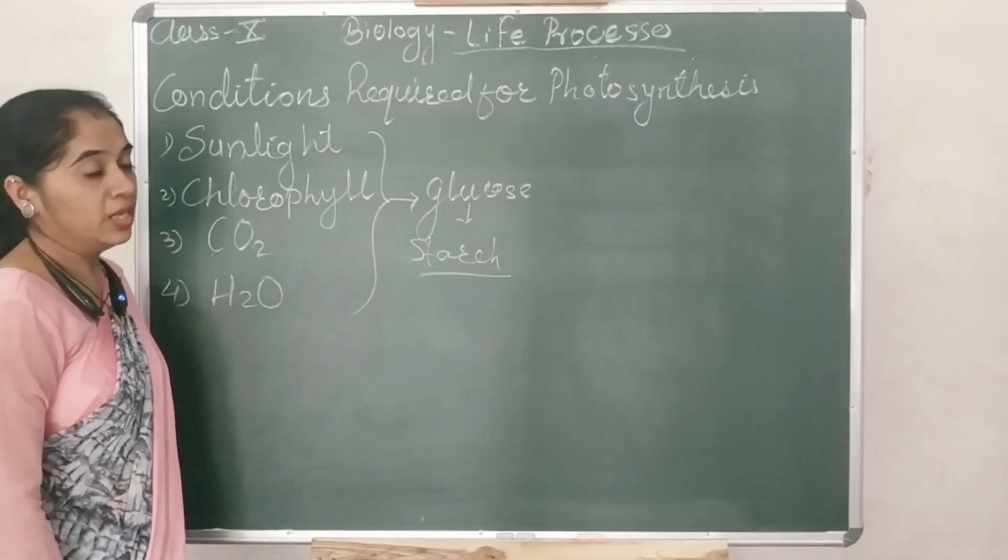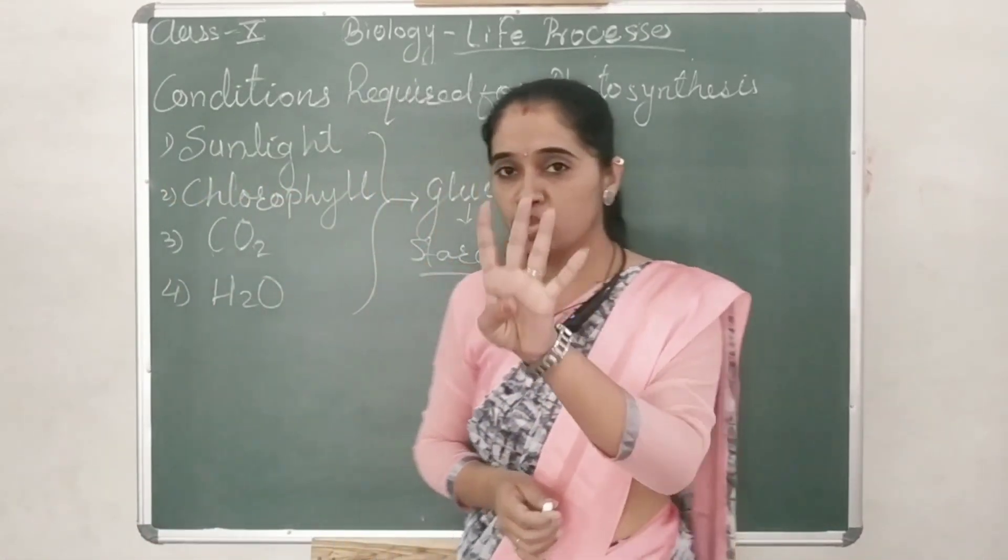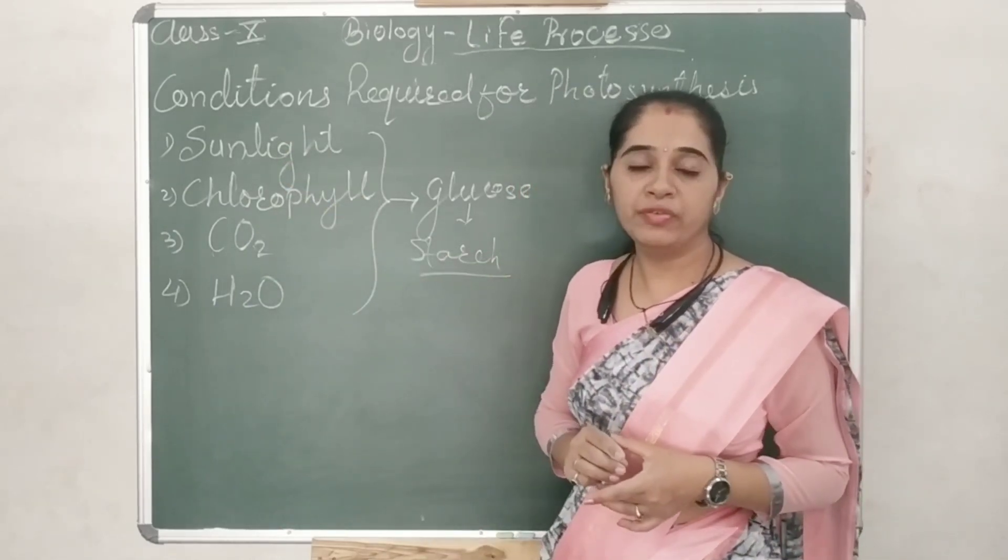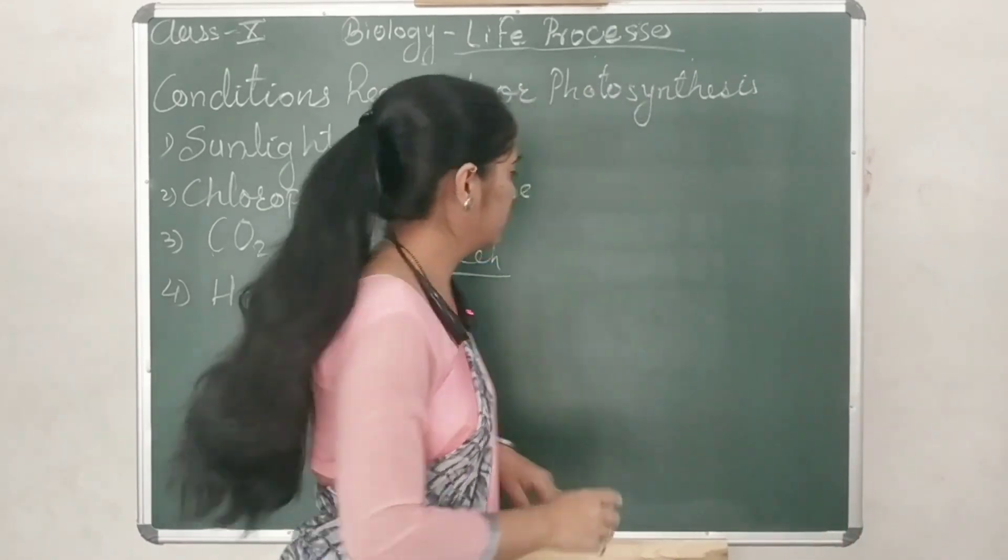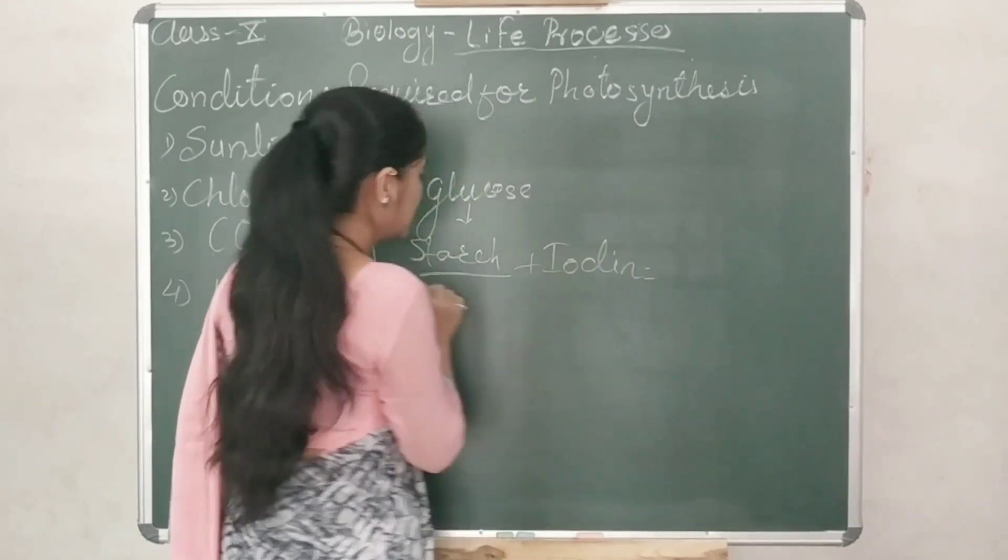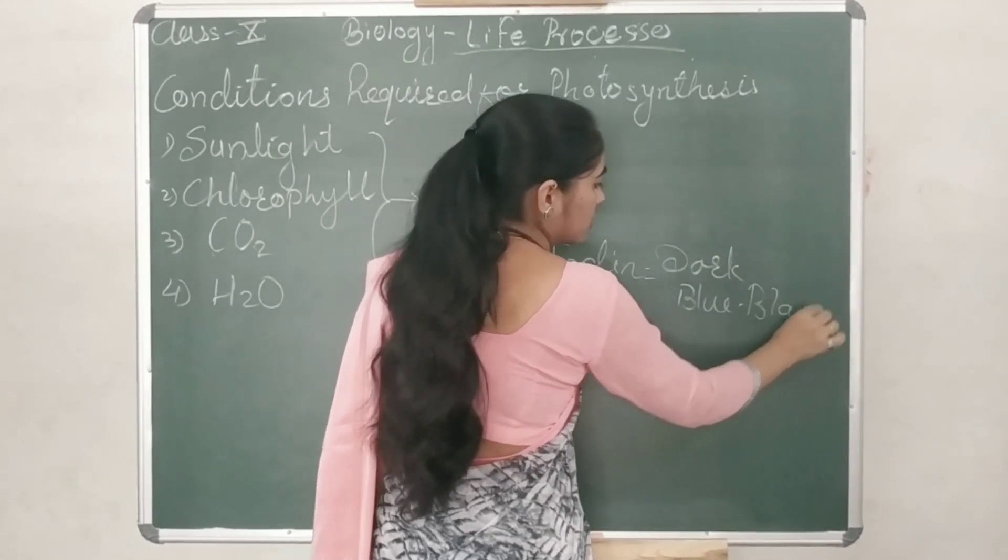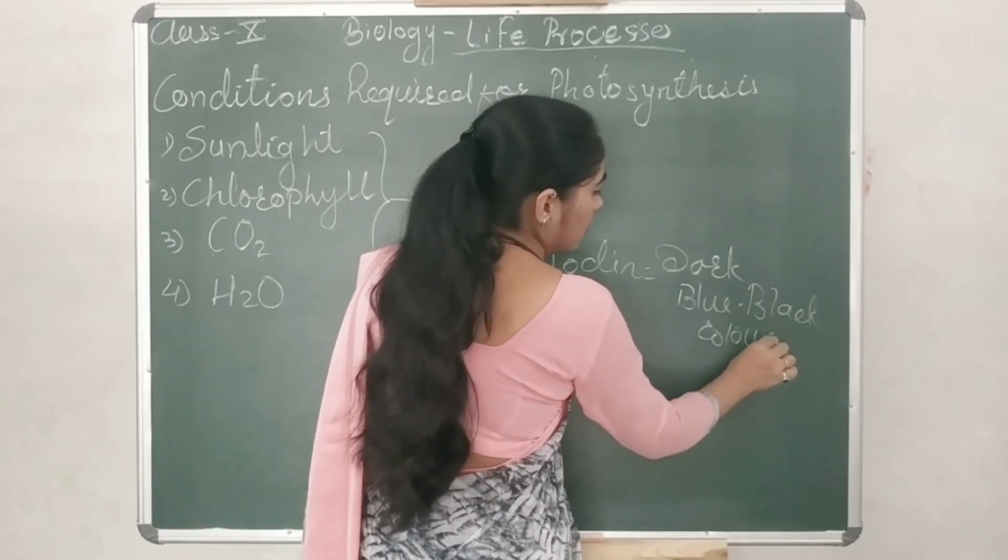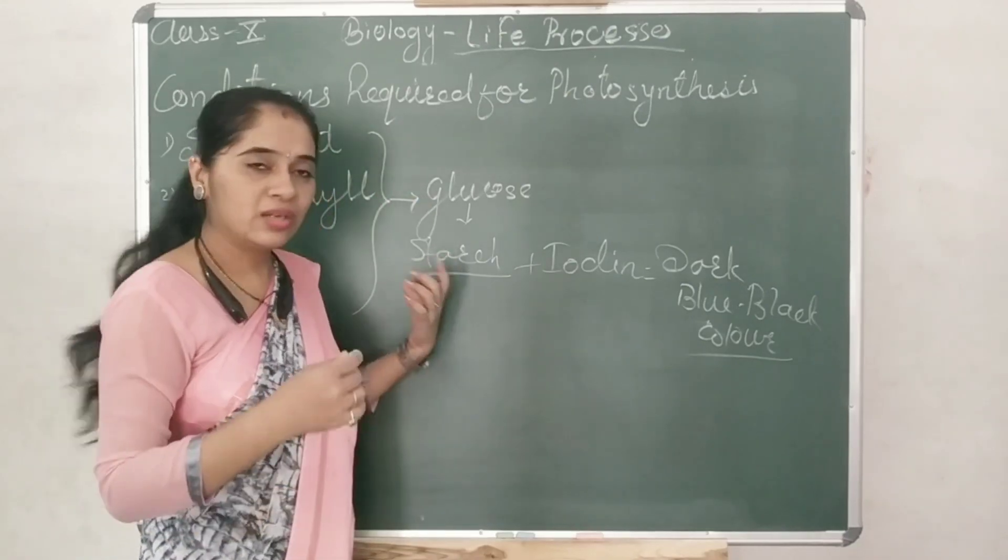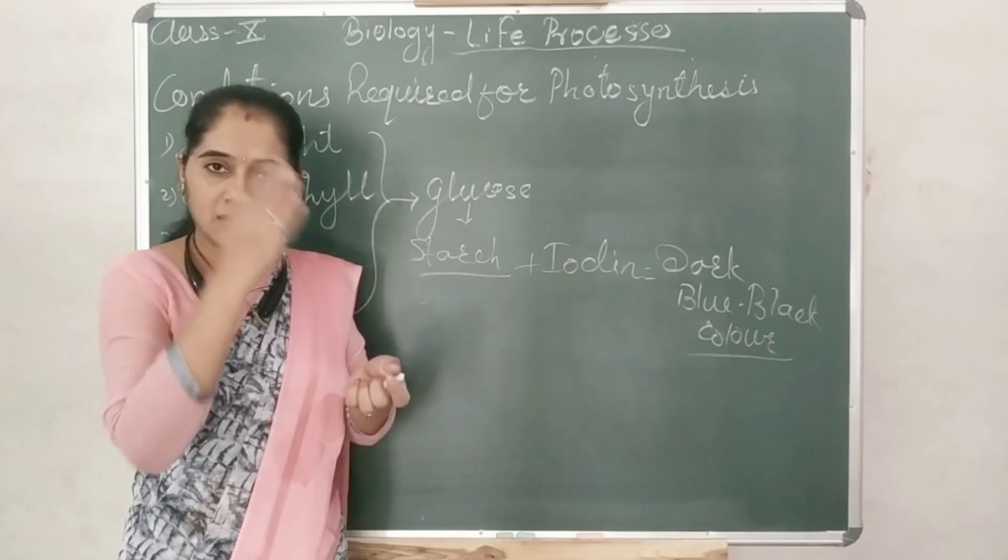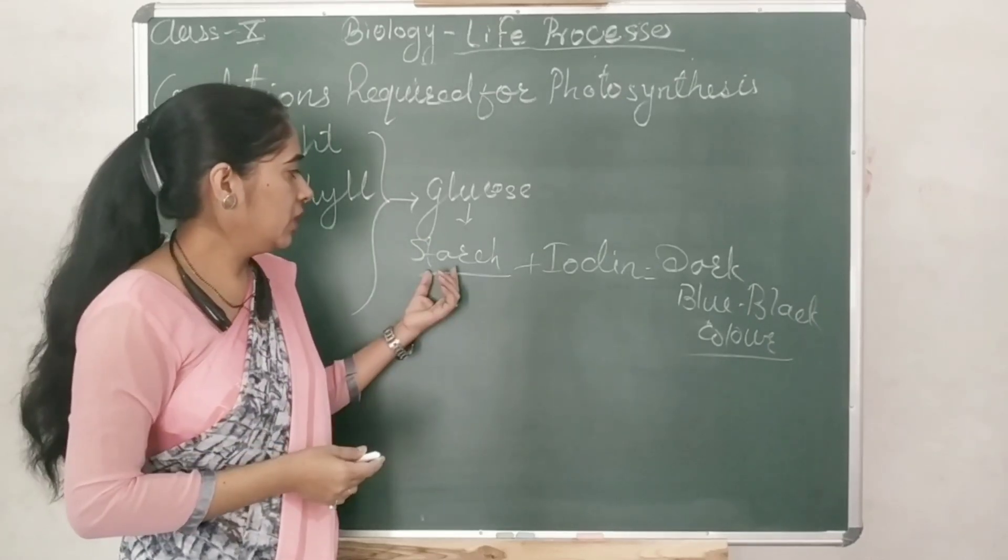That we have to search. How to search? For that we have to do some experiments. Four experiments, one for each component. On what basis we will do those experiments? Those experiments are based on the presence of starch. Because when the iodine reacts with the starch, it gives dark blue or dark black color spots.